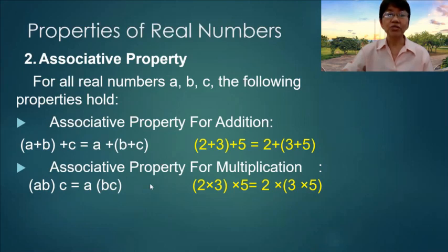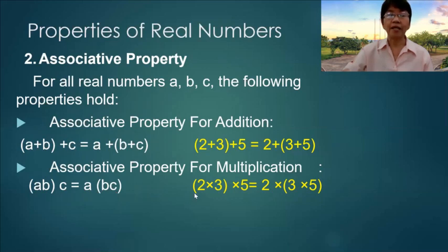For the Associative Property for Multiplication: a times b times c is equal to a times the quantity b times c. For example, 2 times 3 times 5 is equal to 2 times the quantity 3 times 5.